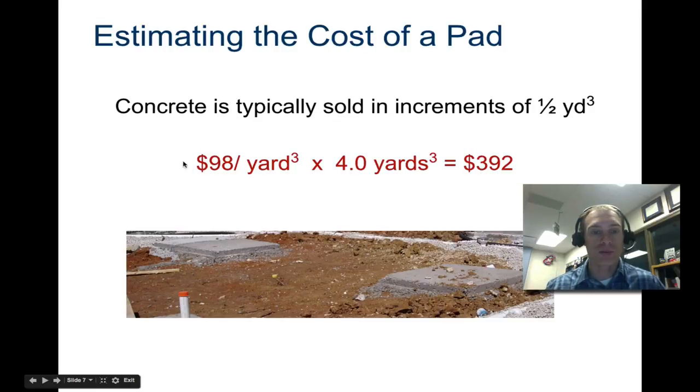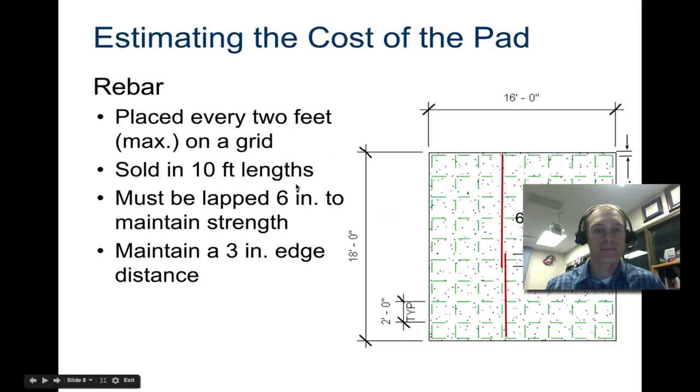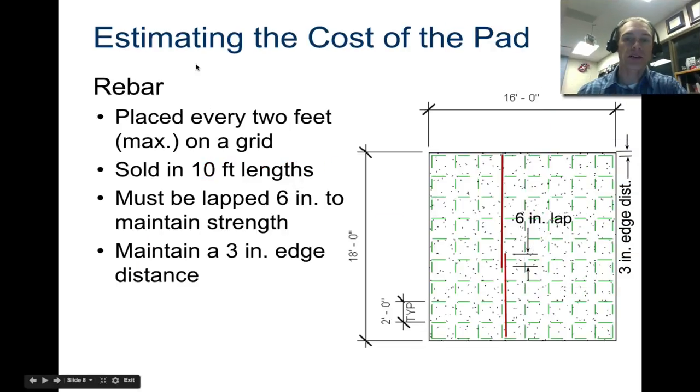Concrete is typically sold in increments of a half yard. If it's $98 a cubic yard, for example, then it would be $392 total. Now this is a little bit low price. Right now it's going to be a little bit more than that and I have price estimates on the assignment. If you're going to estimate the cost of a pad then you need to also calculate the number of rebar that you need. What we did in that prior example was calculate the amount of concrete and the cost for concrete.